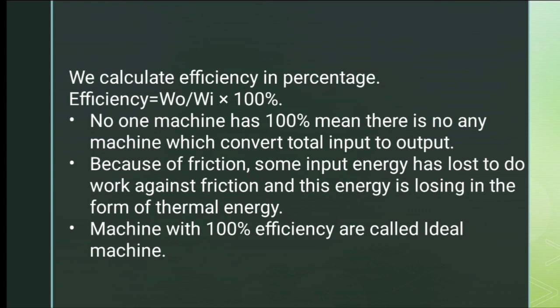No machine is perfectly efficient. This is because of friction. Some input energy is lost to work done against friction, and this energy is dissipated in the form of thermal energy — heat. No real machine achieves 100% efficiency due to these friction losses.